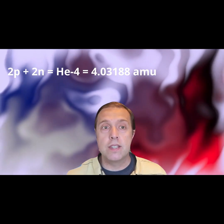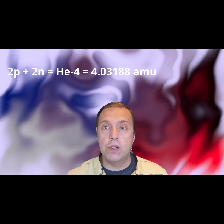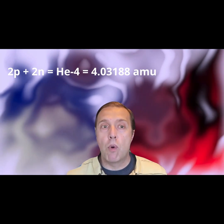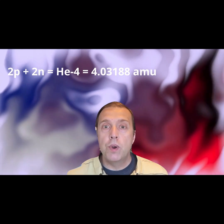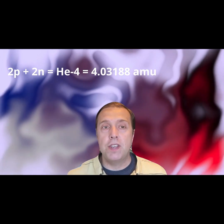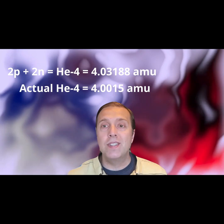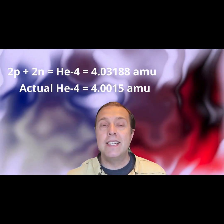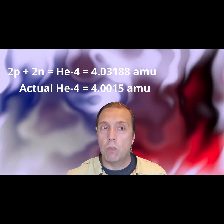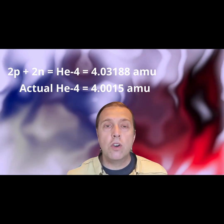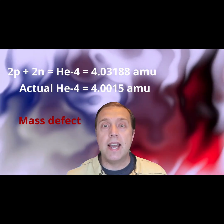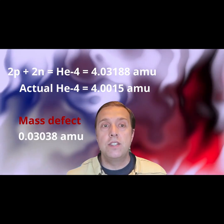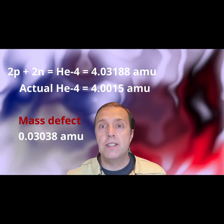Thus, in theory, if we combine two protons and two neutrons together to make a helium-4 nucleus, we should get 4.03188 AMU. However, the real-world physical measurement of the mass of helium-4 is 4.0015 AMU. It's lighter than expected. What happened? This is called the mass defect. The mass defect here is the missing expected amount of mass, which is 0.03038.